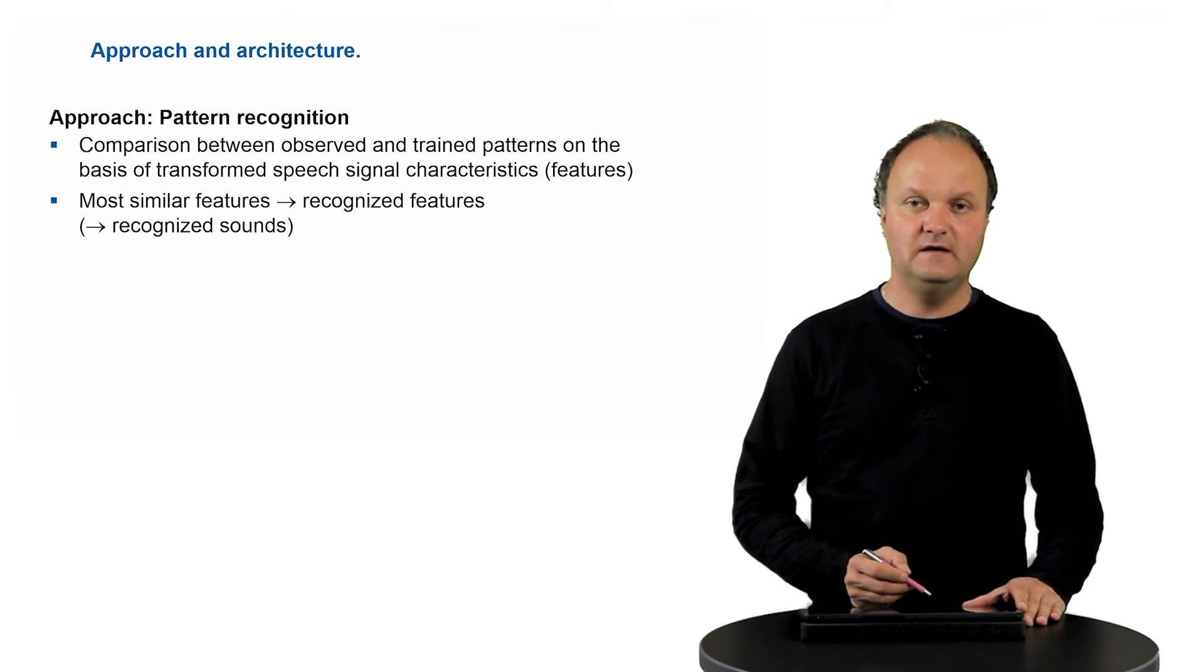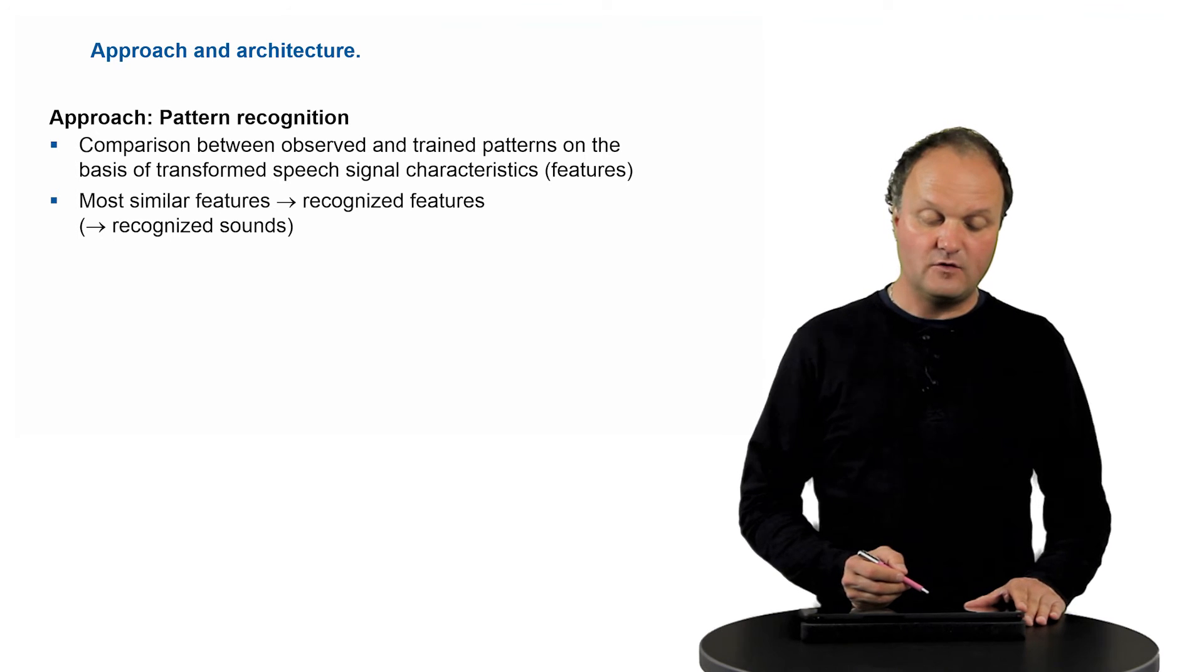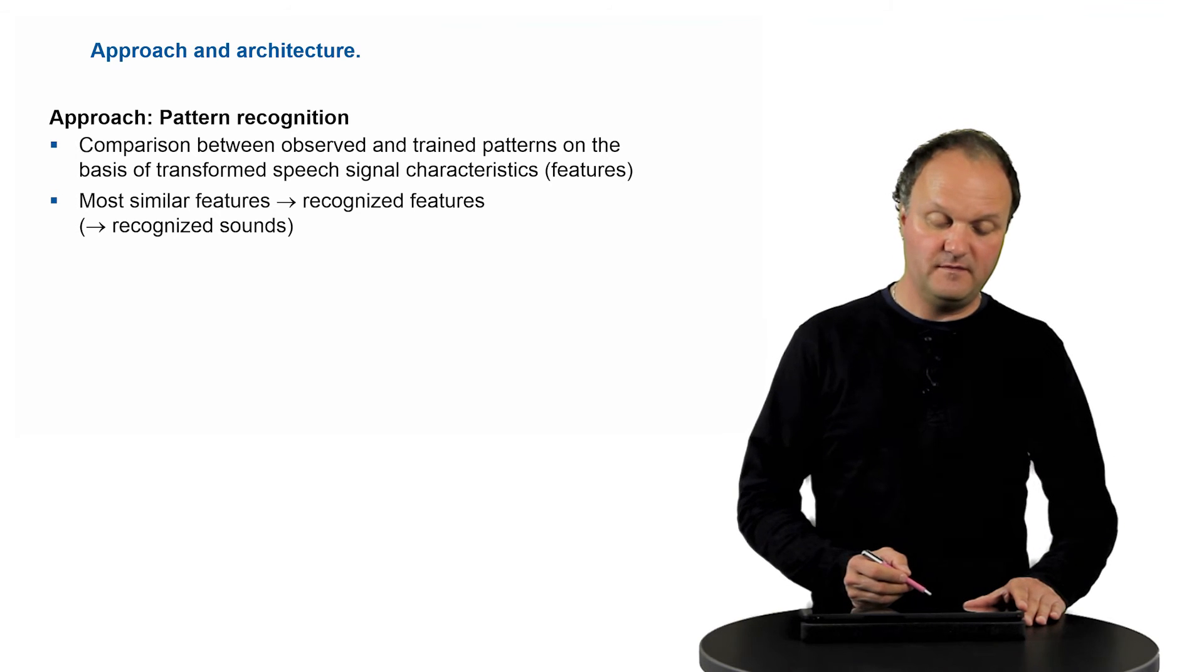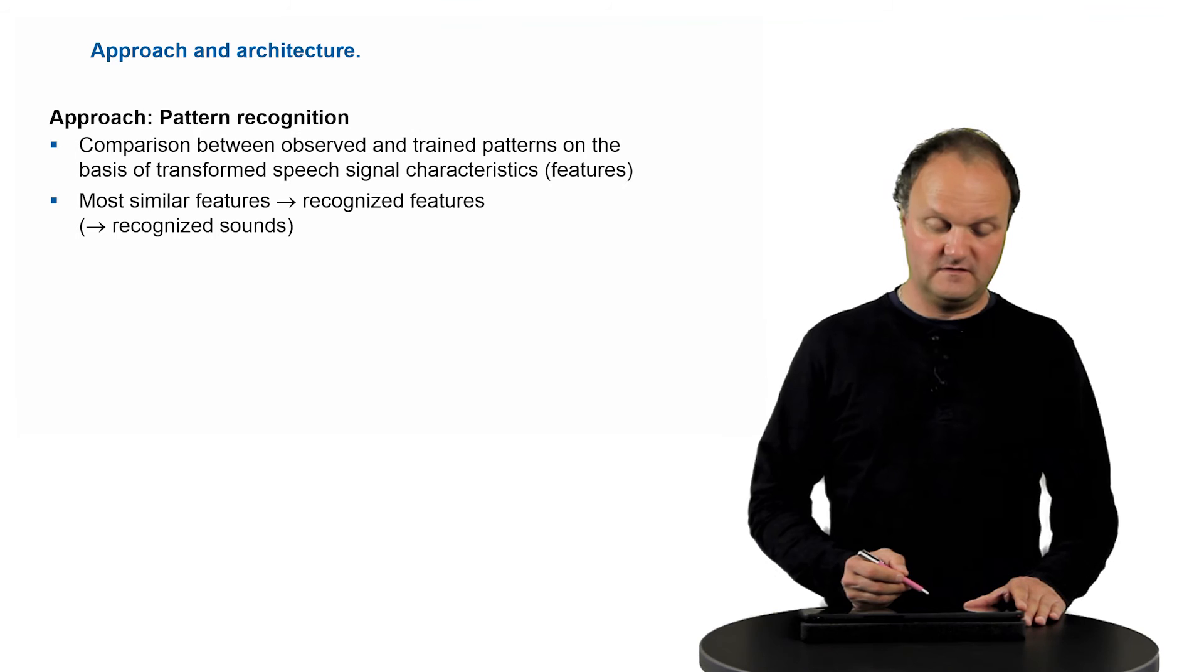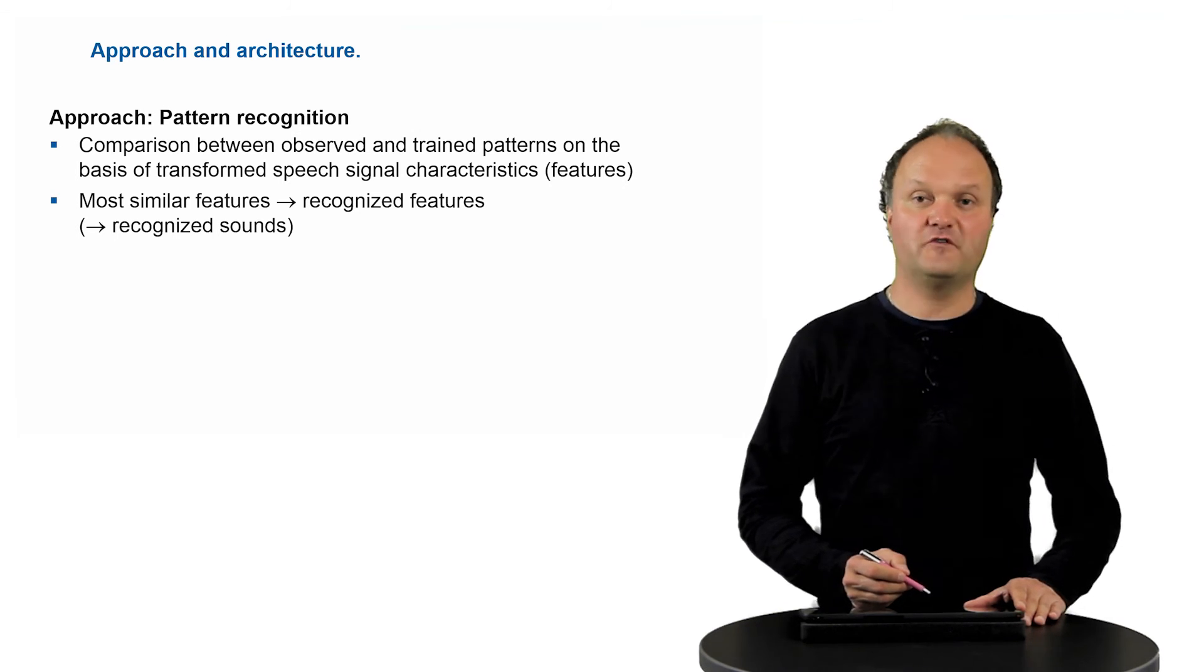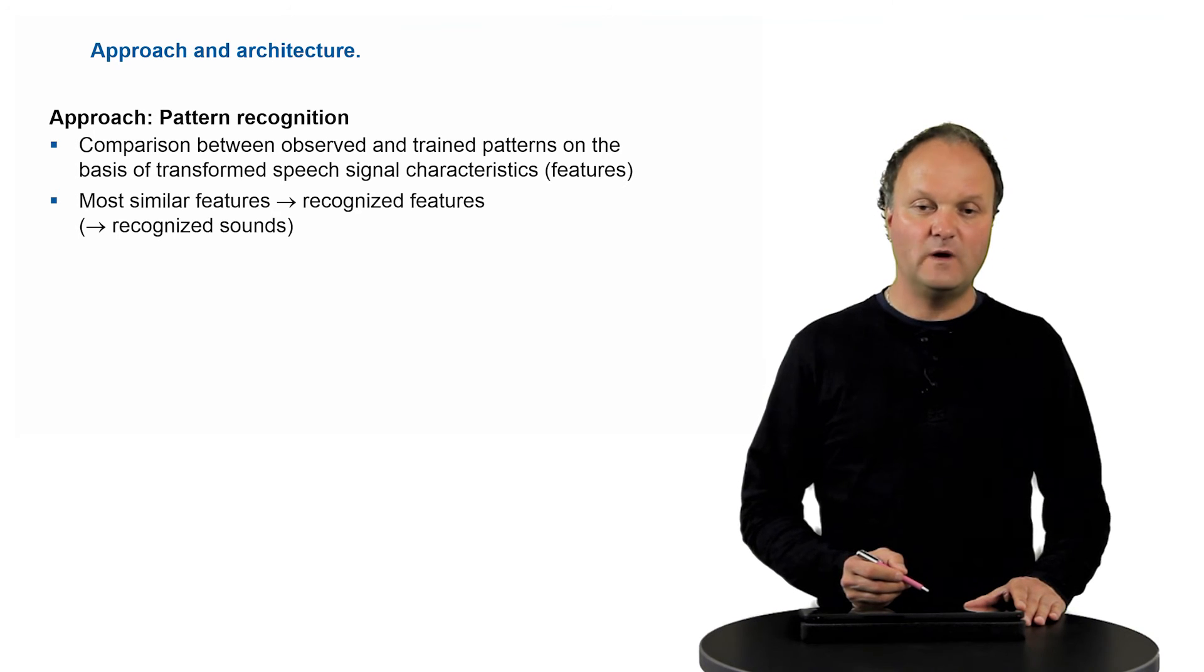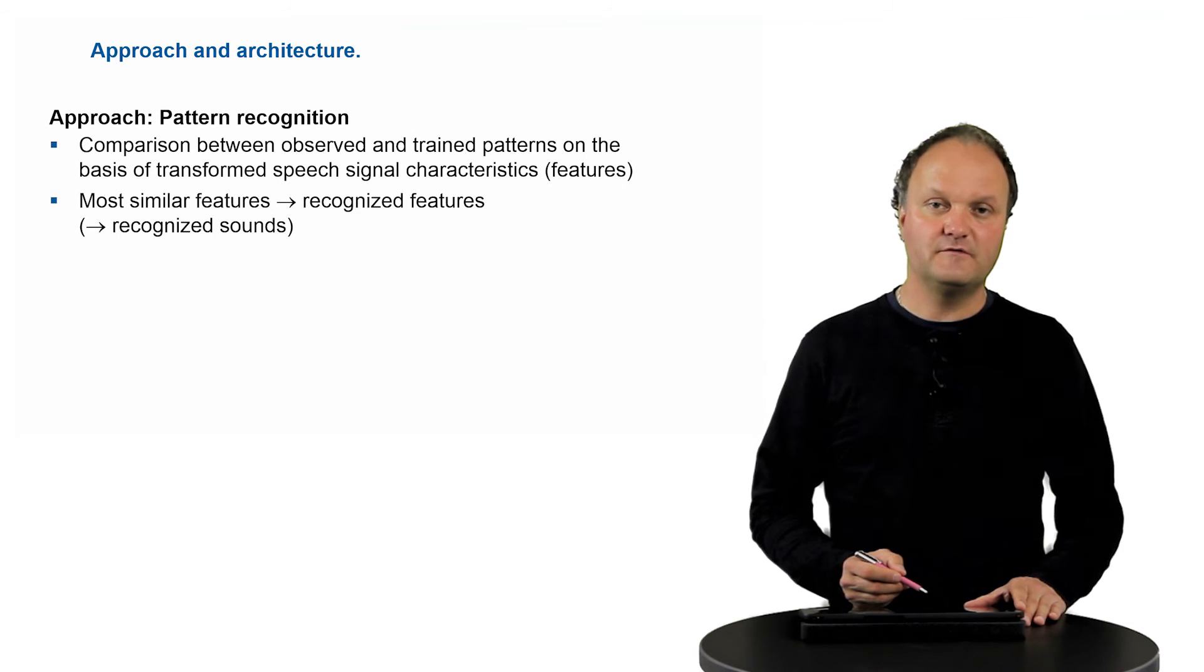Now let's have a look into the approach which is taken by the computer in order to recognize speech. The approach which is actually used is a pattern recognition approach, that is, the computer compares patterns which he can extract from the speech signal coming in to pre-trained patterns from the background knowledge. So there's a comparison between features extracted from the speech signal coming in to the microphone and speech signal features which have been learned previously. The most similar features are then the so-called recognized features and they correspond to recognized sounds. Because each sound is produced in a slightly different way, there is only a probability that an observed feature corresponds to a sound. So what comes out of a recognizer is actually a probability or n-best list of most probable words or sentences which might have been said by the speaker.